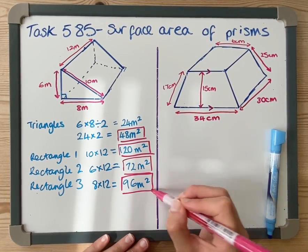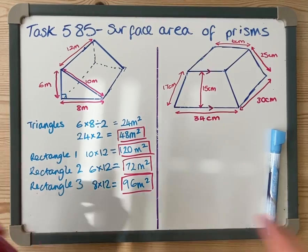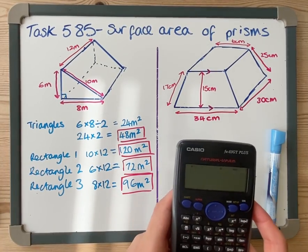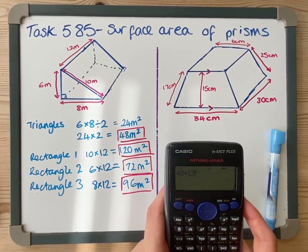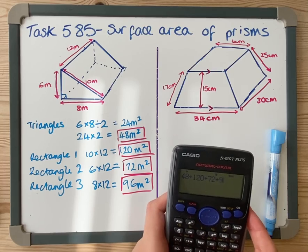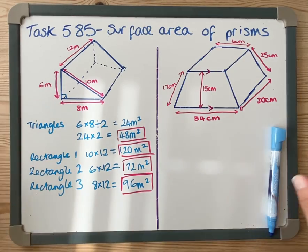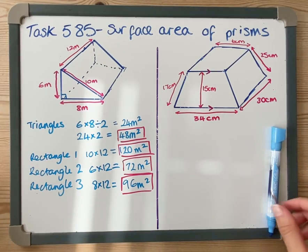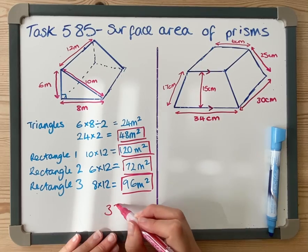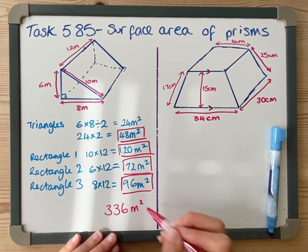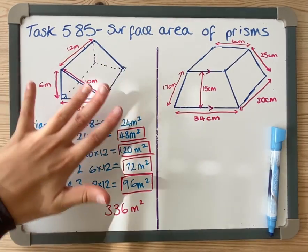To get the total surface area, I just need to add them together. So I'm just going to quickly do on my calculator, 48 plus 120 plus 72 plus 96, which is 336 meters squared. And that is the total surface area for this shape.